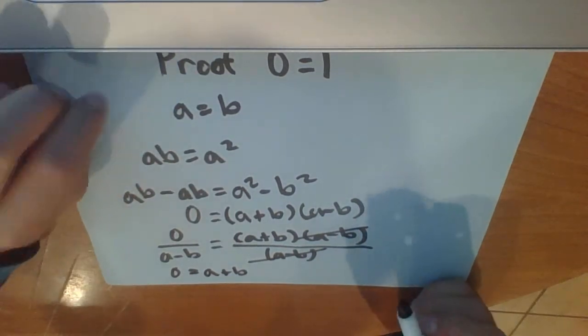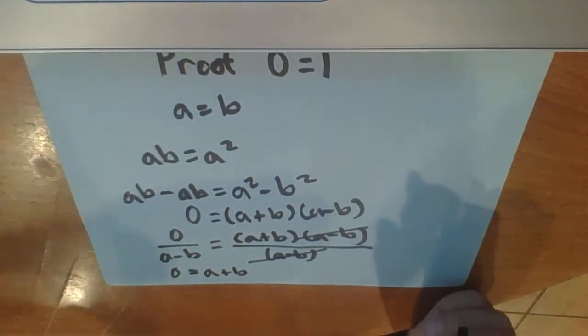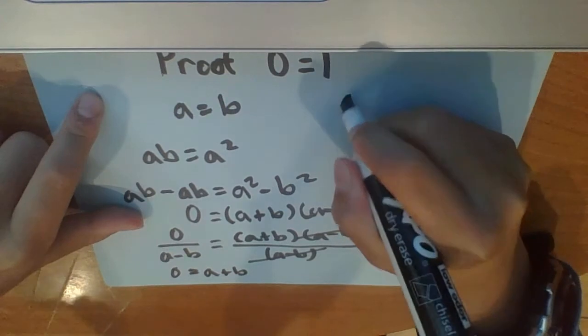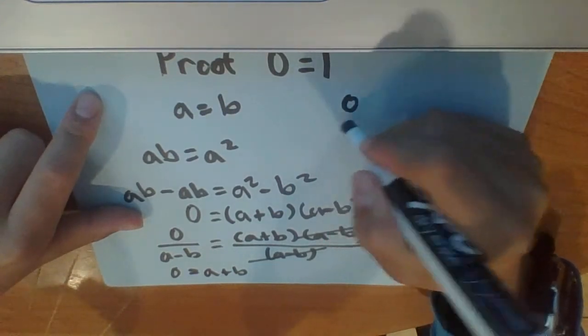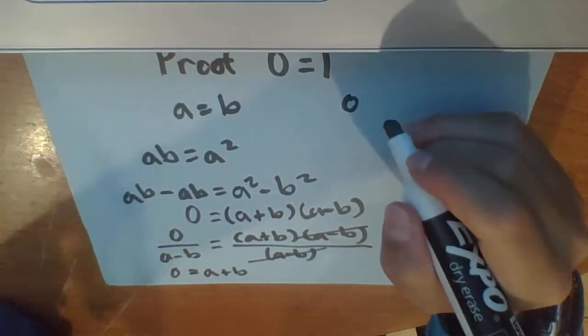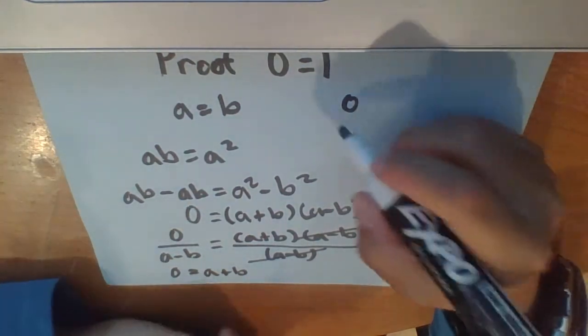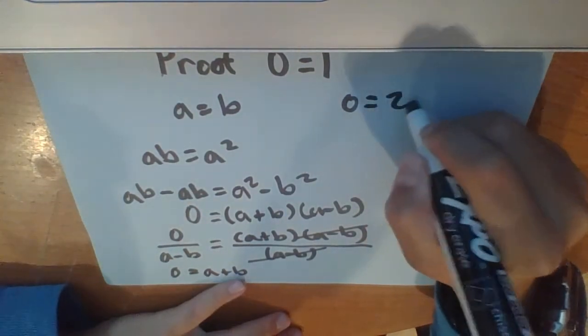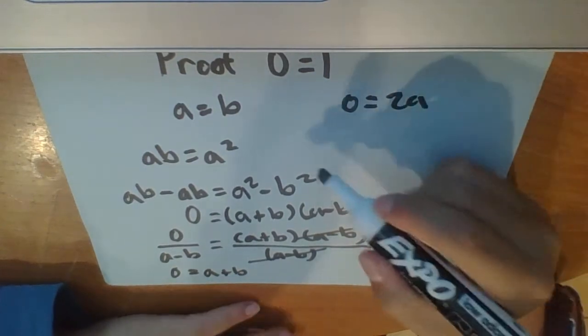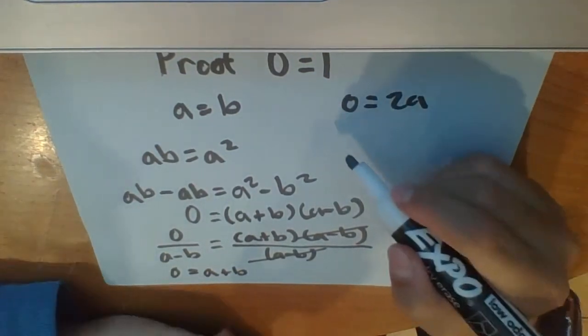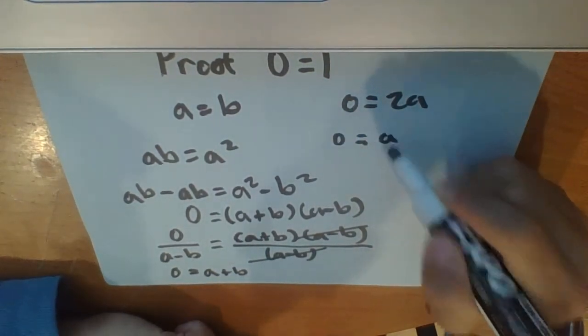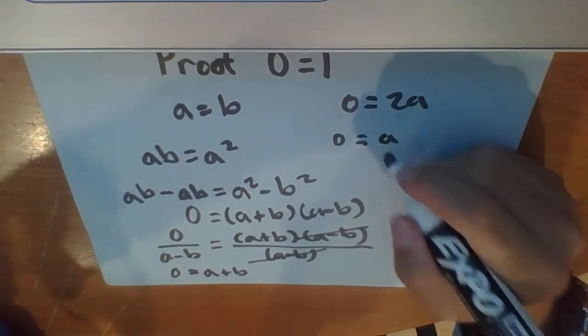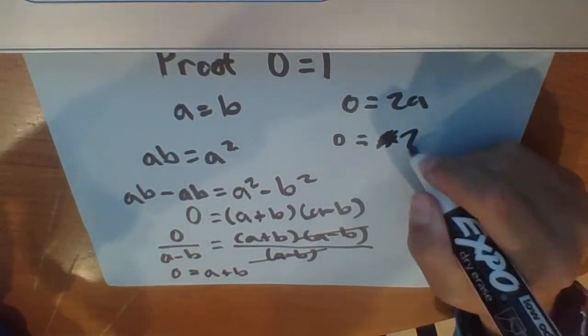And then this also proves that 0 equals 2 and you can leave it off as like 0 divided by... Wait, let me think about that. So yeah, 0 is equal to 2a. Divide both sides by 2 and you... Not 2a. Oh my gosh, I keep messing it up. 0 is equal to 2.